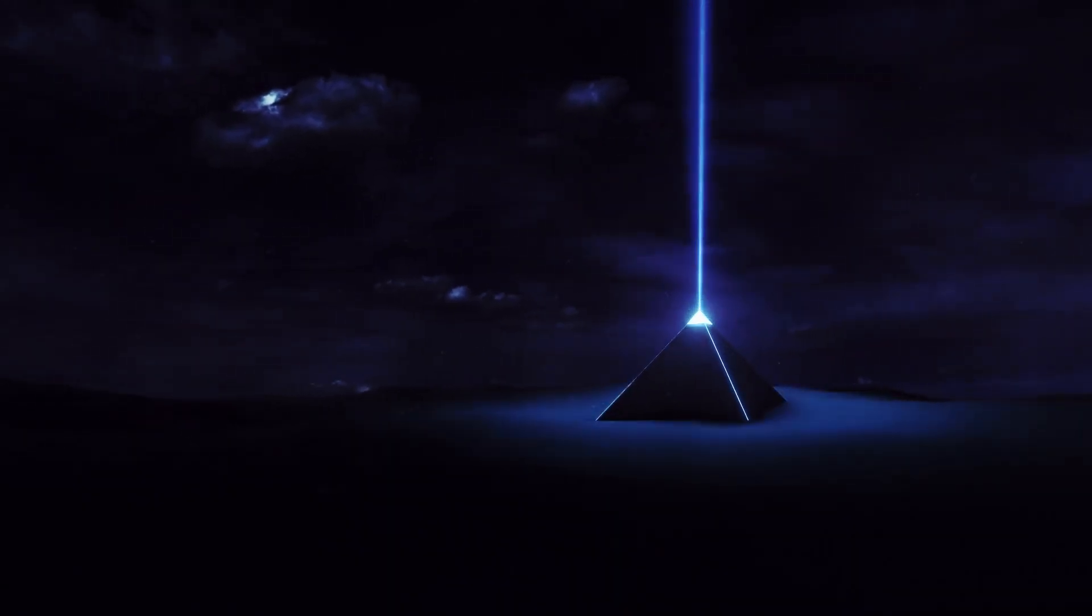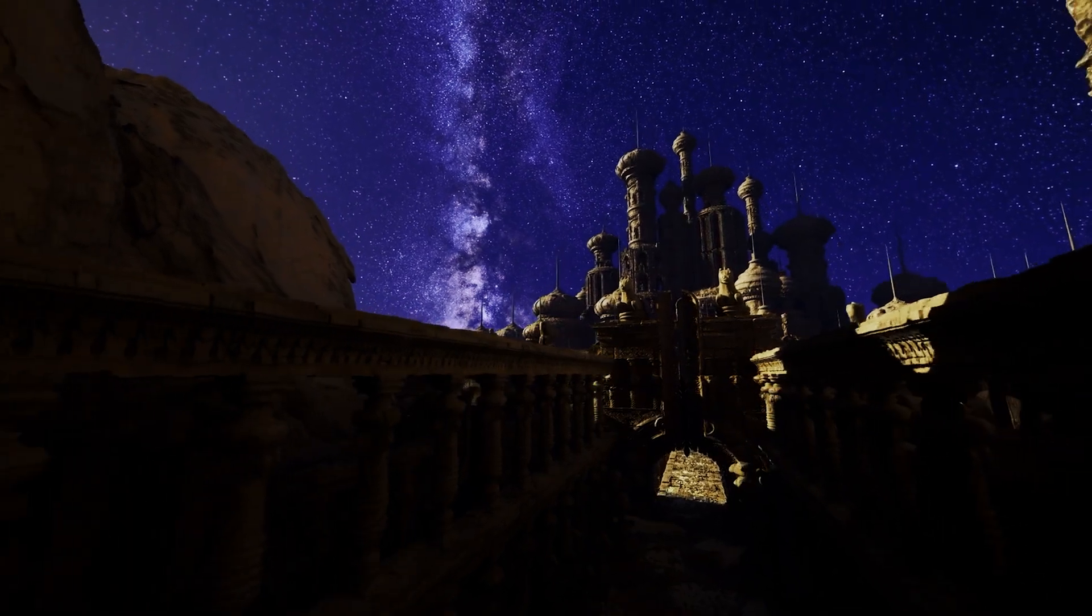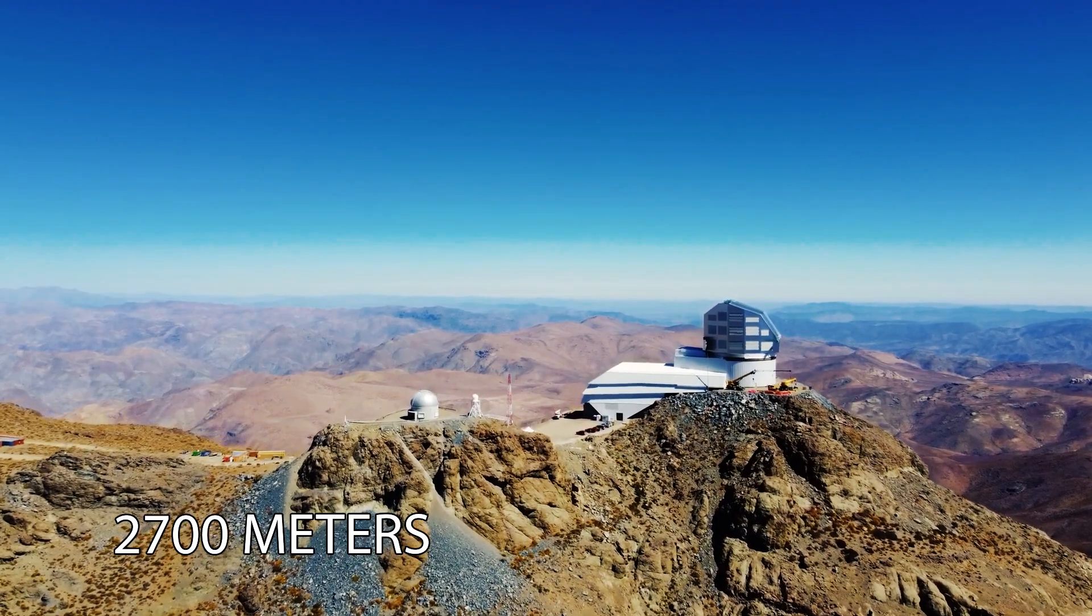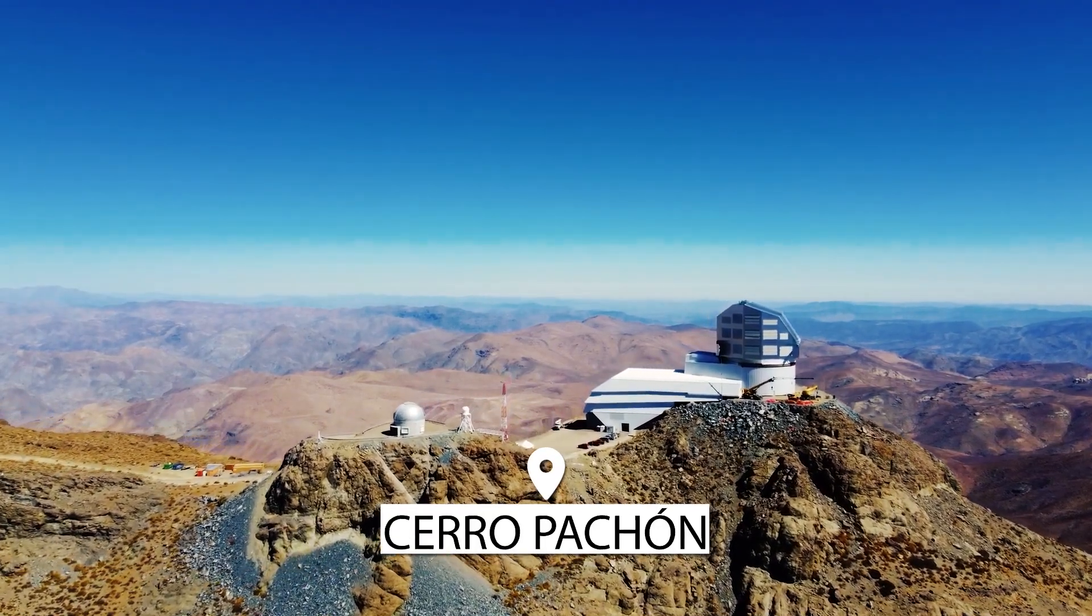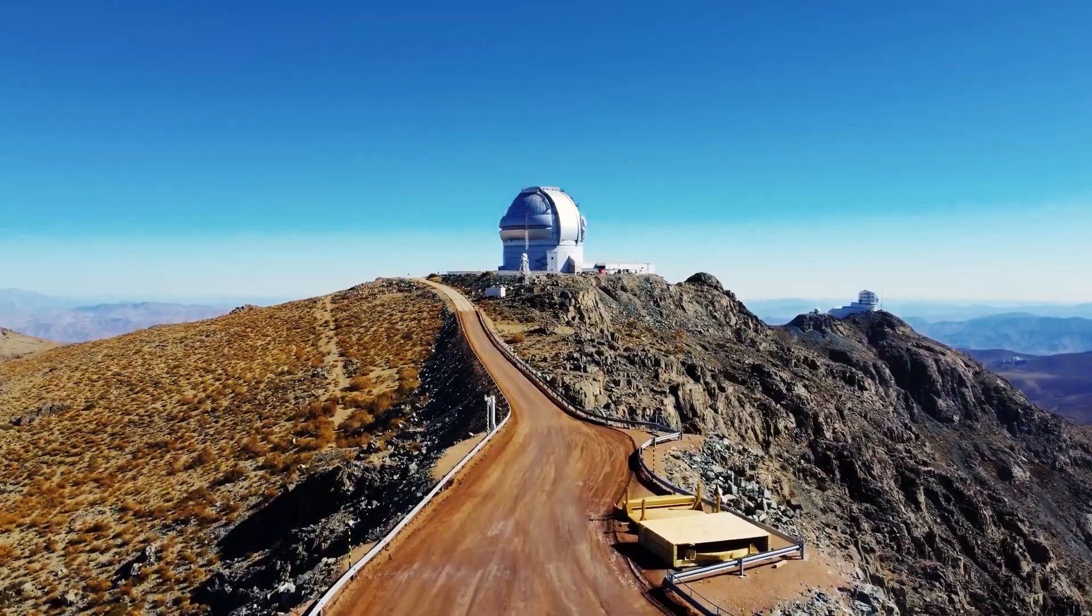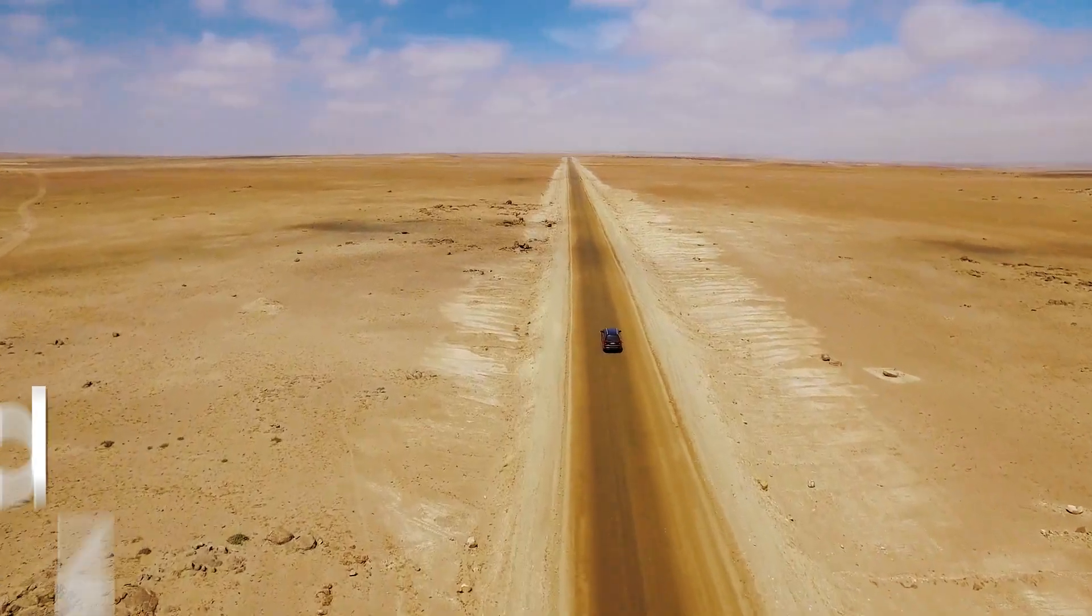For decades, we have built our temples to the stars in the most remote, pristine corners of our world. This one is no different. Perched 2,700 meters above sea level on Cerro Pachon, a desolate peak in the Chilean Andes, sits the Vera C. Rubin Observatory. This is the Atacama Desert, one of the driest places on Earth.